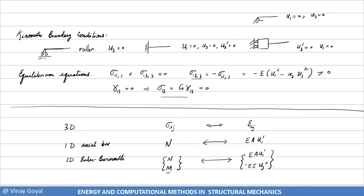I demonstrated an analogy showing how sigma_ij is energetically conjugate to epsilon_ij in 3D, while in axial bar theory the internal force N (in pounds) is energetically conjugate to EA*U1_prime. In Euler-Bernoulli beam theory, N and M are the internal forces: N is energetically conjugate to EA*U1_prime, and M is energetically conjugate to minus EI*U3_double_prime (the curvature). The advantage of 1D theories over 3D is computational efficiency — modeling trusses with 3D elements can be very expensive.